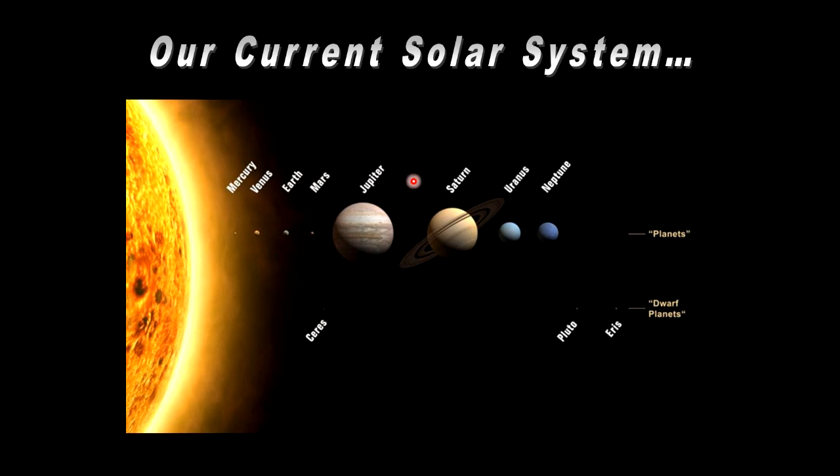So why do we have the gas giants forming in the outer region? And the terrestrial rocky planets forming in the inner regions? And then we have the dwarf planets also, which in particular Pluto is a member of. We'll discuss that some more. And Ceres here is actually part of the asteroid belt between Mars and Jupiter. So let's gain a little bit of understanding about what's going on here.